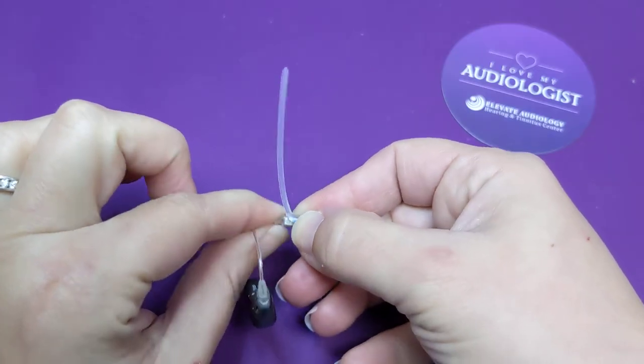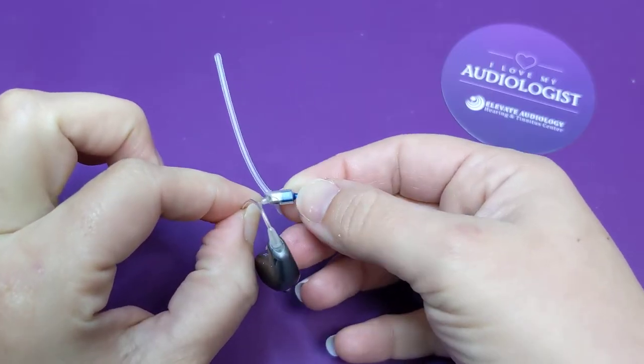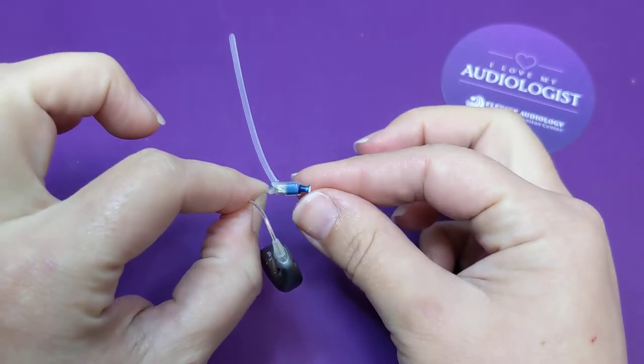So this just slides right on there until it catches right on the end. And then you would put the dome.